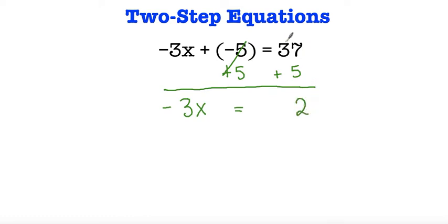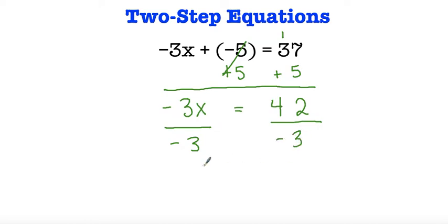This cancels out, and I'm left with negative 3x is equal to 37 plus 5. 7 plus 5 is 12, 1 plus 3 is 4, so negative 3x is equal to 42. In order to get rid of that, I have to divide both sides by negative 3. Negative 3x divided by negative 3 is simply 1x, or just x, is equal to 42 divided by negative 3. A positive divided by a negative is going to equal a negative, so it's going to be negative. And 42 divided by negative 3 is negative 14, because 14 times 3 is equal to 42, and that's a negative.